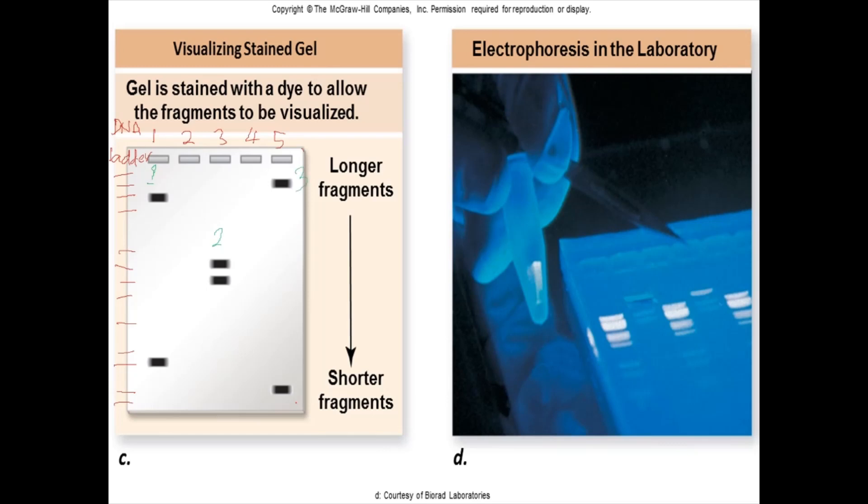The further the DNA bands move away from the well, the smaller the size of the DNA, as they can move faster through the porous gel. These DNA bands remain near the well as they have longer fragments. The samples from reaction two, which have medium-length fragments, are positioned in the middle of the gel.